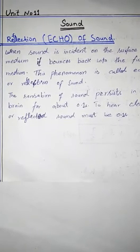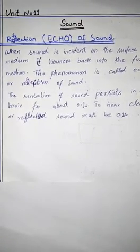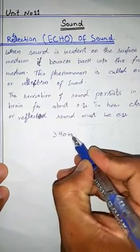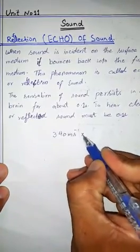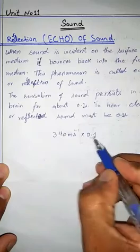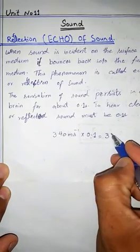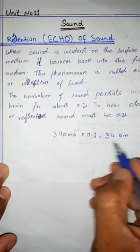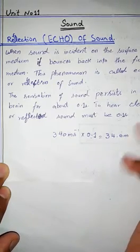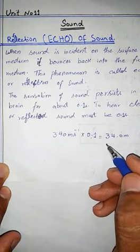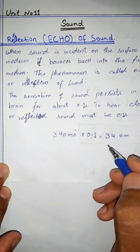Echo may be heard more than once due to successive or multiple reflections. If we consider the speed of sound is 340 meter per second in air, multiplied by the time that is the sensation time of about 0.1 second, we will get the exact distance that is equal to 34.0 meter. That is the total distance traveled by a sound.